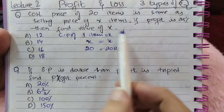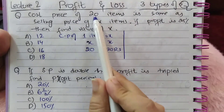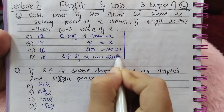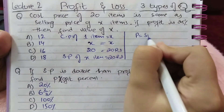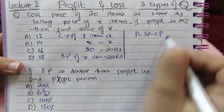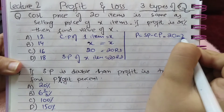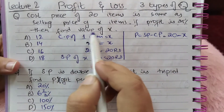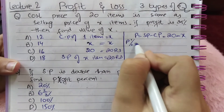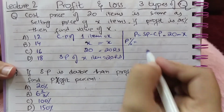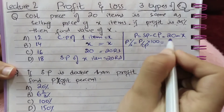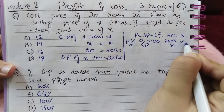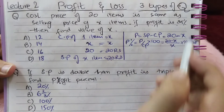Since cost price of 20 is the same as selling price, the selling price of x items is 20 rupees. Profit equals sale price minus cost price, so profit is 20 minus x. To find profit percent, use the formula: profit percent = (profit / CP) × 100, which gives (20 − x) / x × 100 = 25.